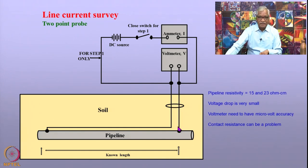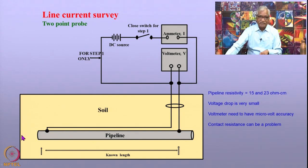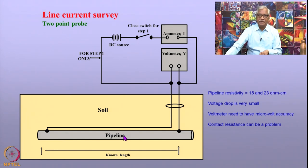In the two-point probe technique, there is a problem with contact resistance. These contacts can significantly add to the resistance measured, and that is one of the disadvantages of the two-probe technique.